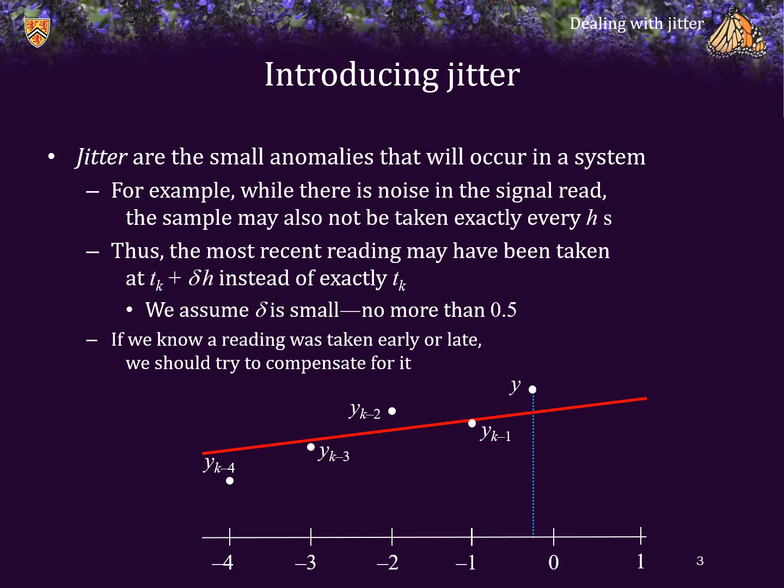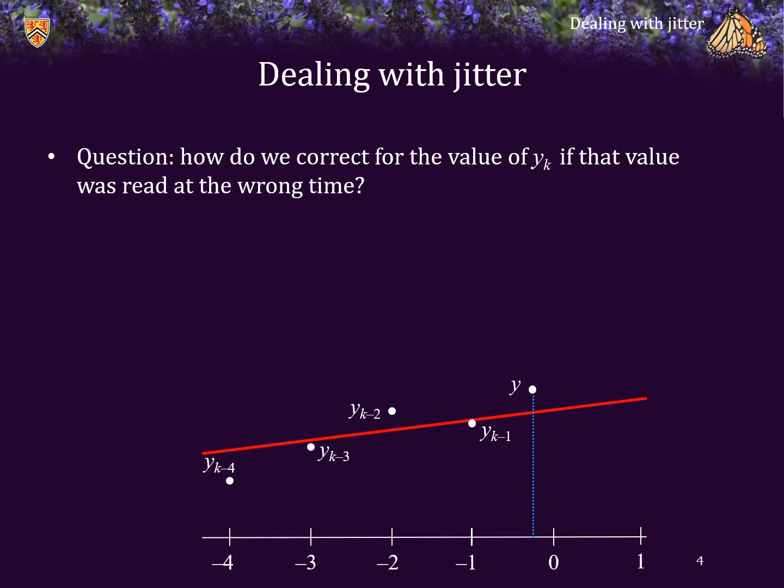Now, if we actually know whether or not a reading was taken early or late, we should try to compensate for it. So the question is, how do we correct to find a reasonable value for y sub k if the reading y was not taken at the time we expected it to be read?